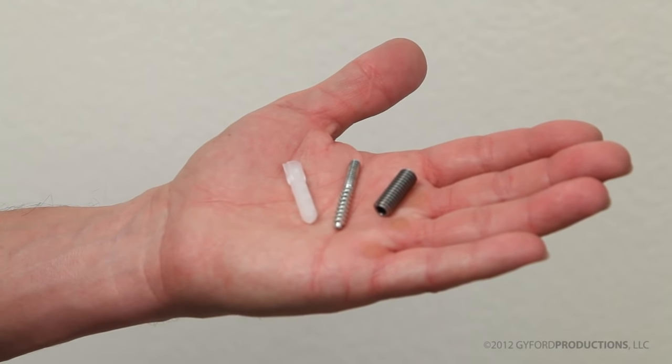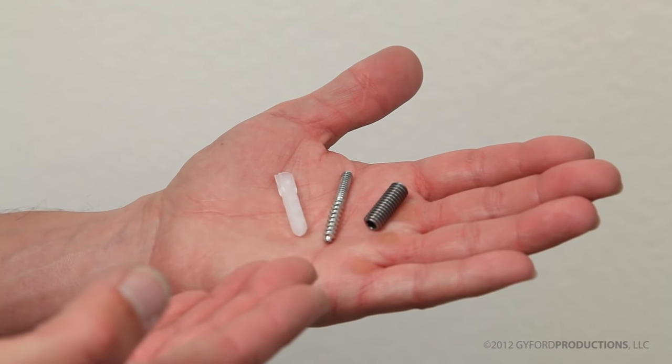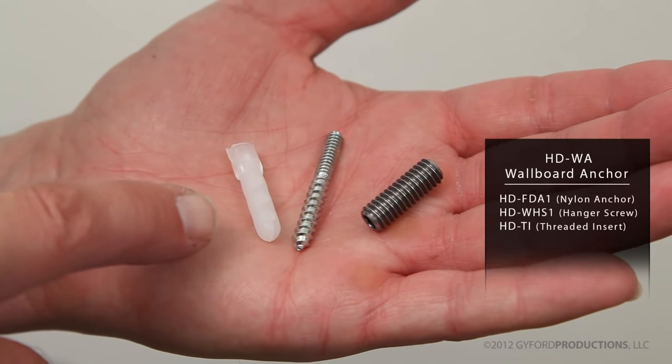Our WA or wallboard assemblies are comprised of three parts, the HDFDA1 being the anchor.